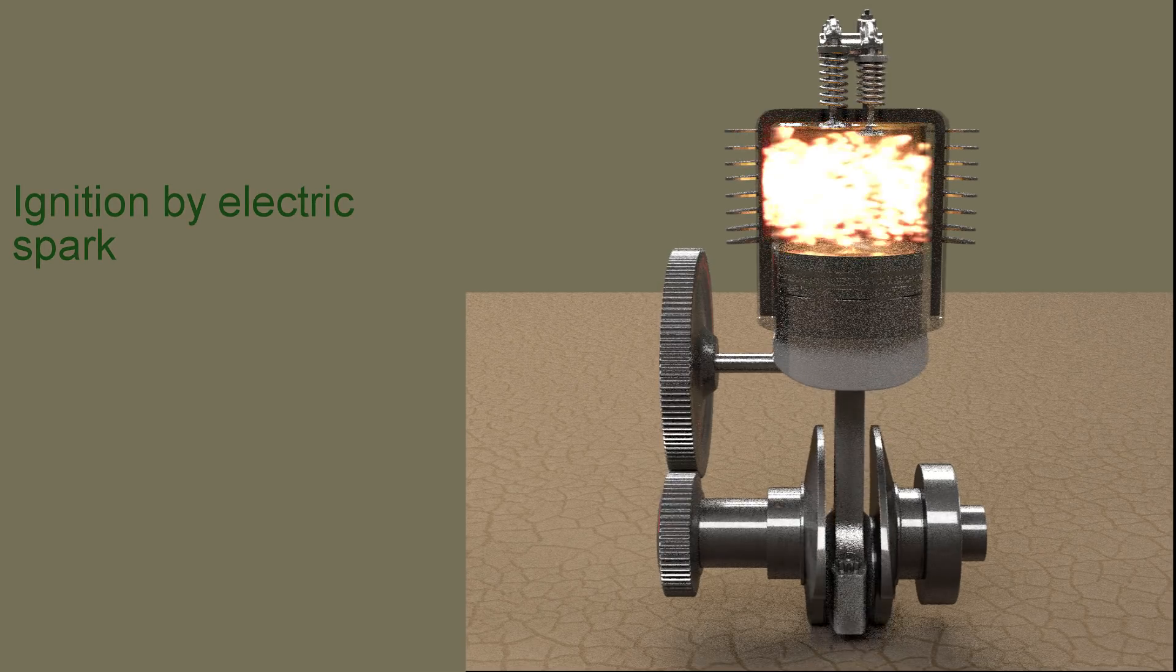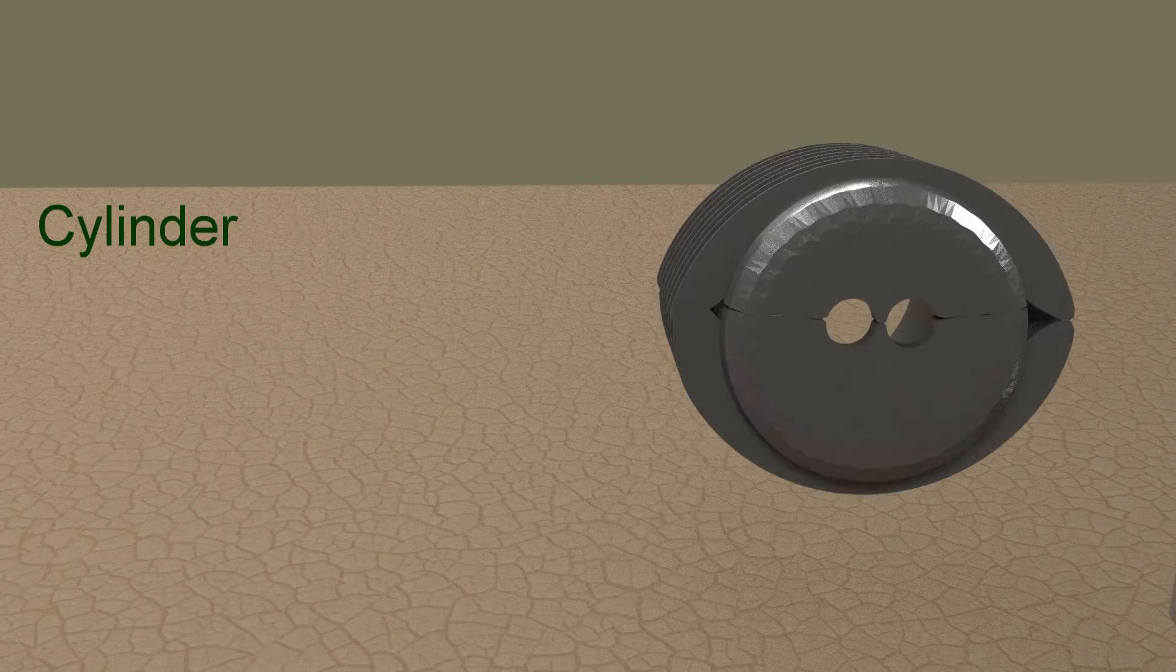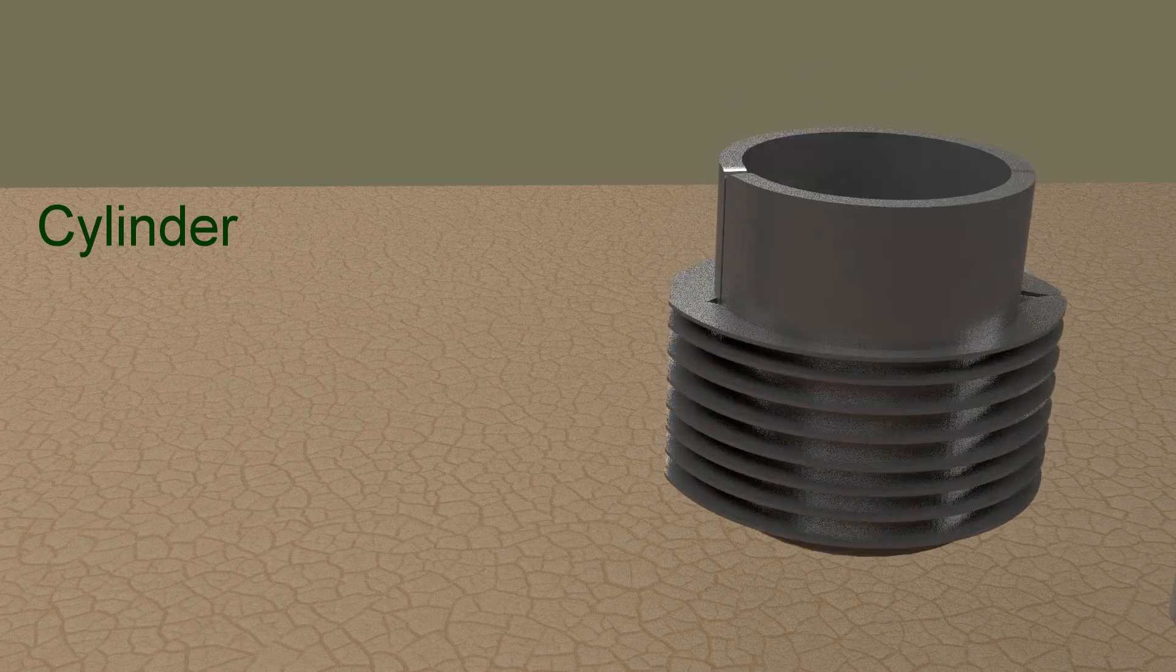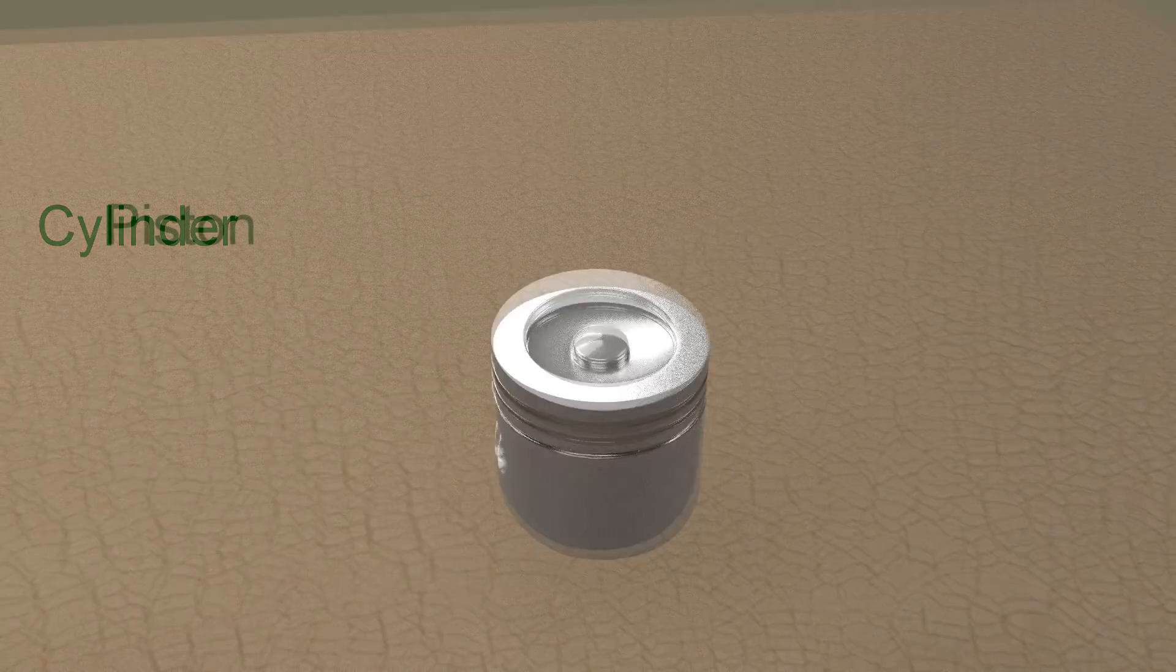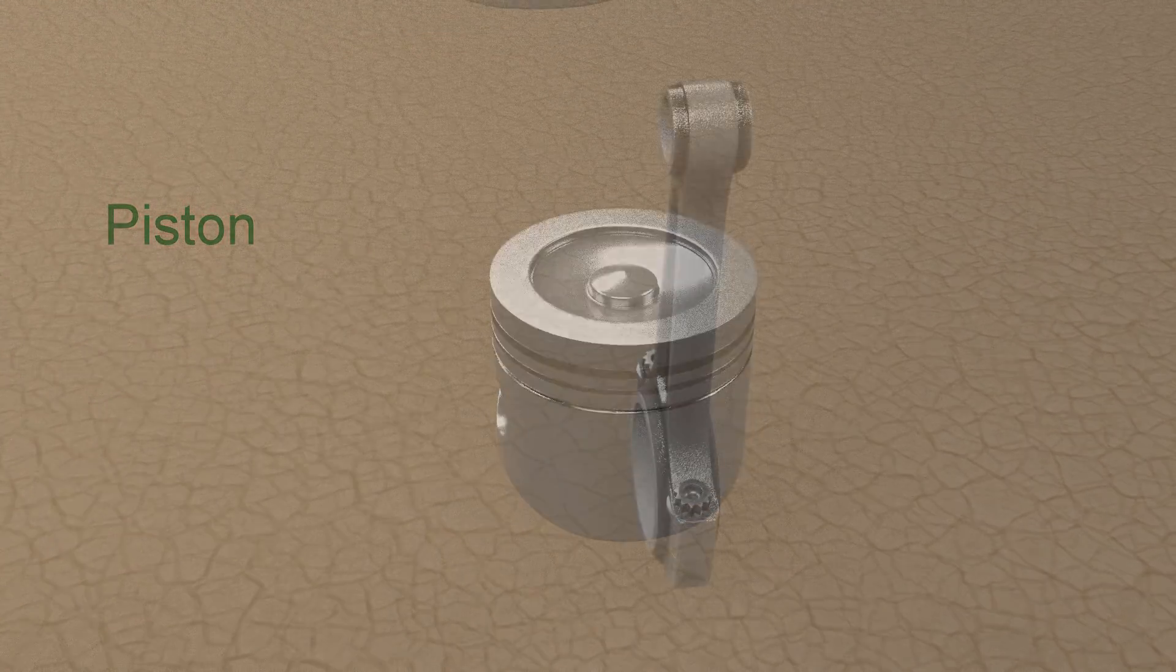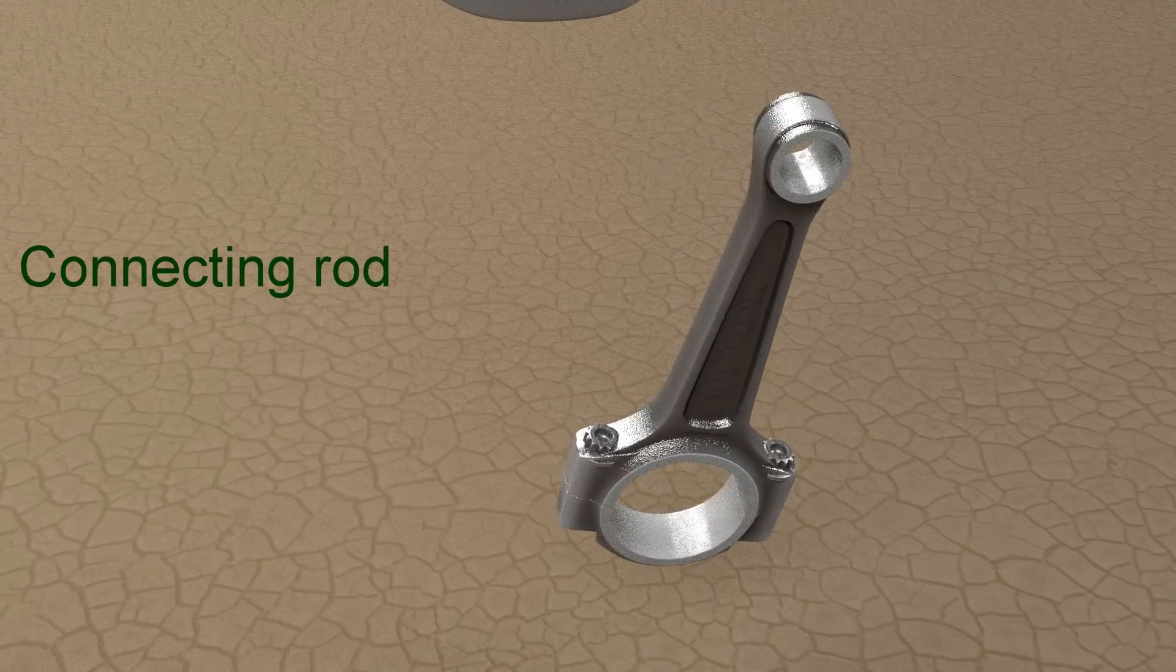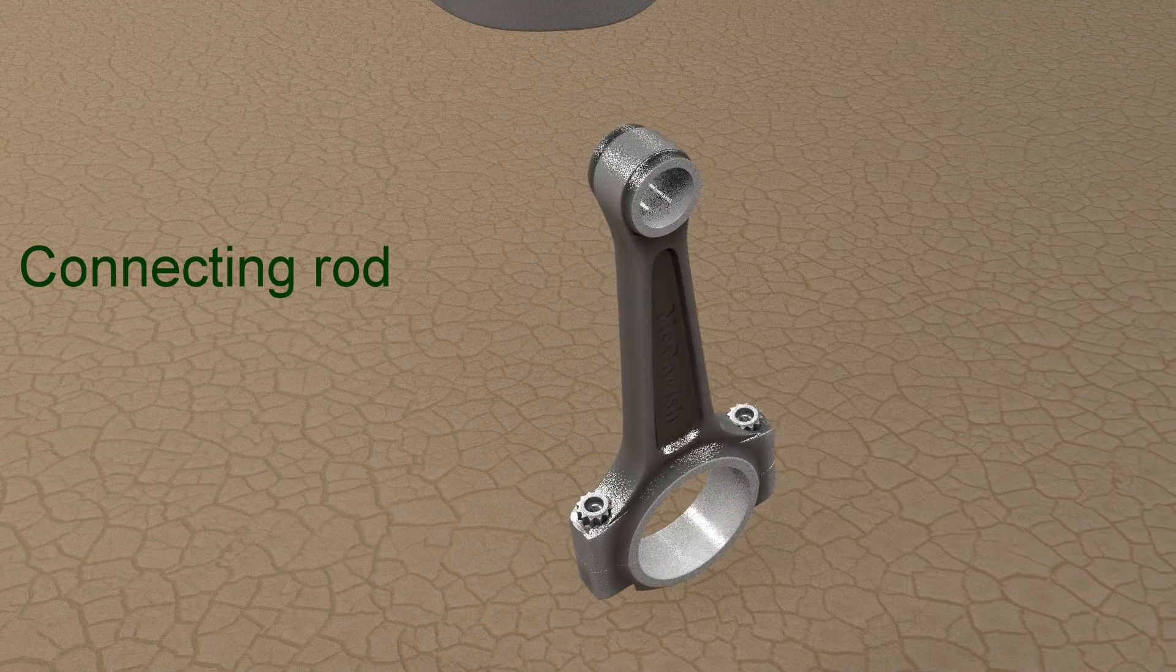A four-stroke petrol engine is made up of the following parts. Cylinder: it is a cylindrical vessel in which piston reciprocates. Piston. Connecting rod: interconnects the piston and crankshaft and transmits the forces from the piston to crankshaft.